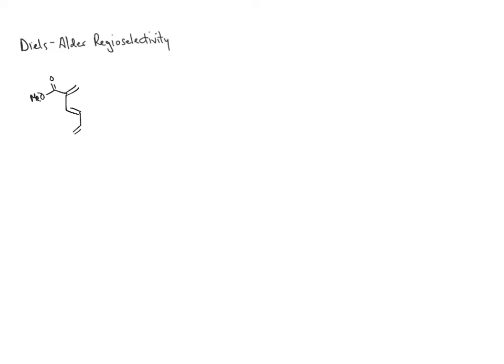Let's first start with regioselectivity and take the following example. We react this diene with the following dienophile. When examining the diene and dienophile, we want to know whether this is a normal Diels-Alder reaction or an inverse electron demand Diels-Alder reaction. This is an inverse electron demand Diels-Alder because the dienophile has an electron donating group and the diene has one or two electron withdrawing groups.